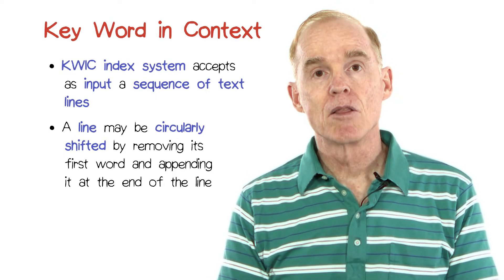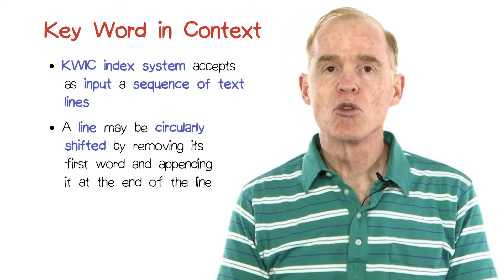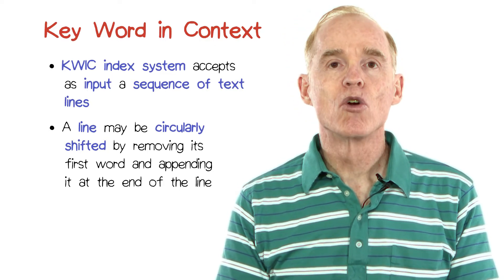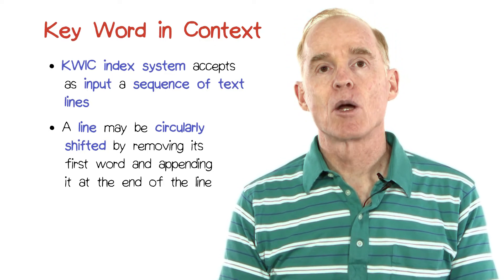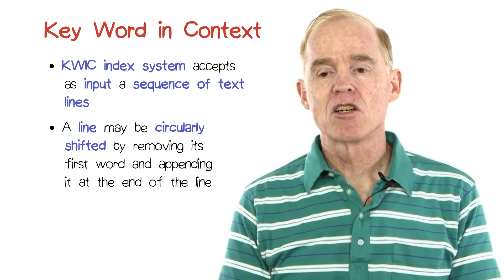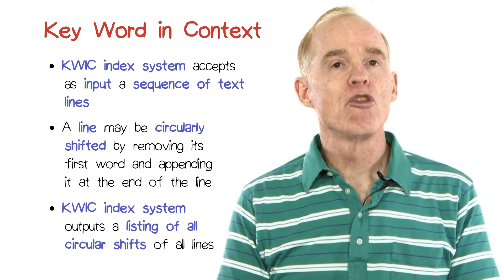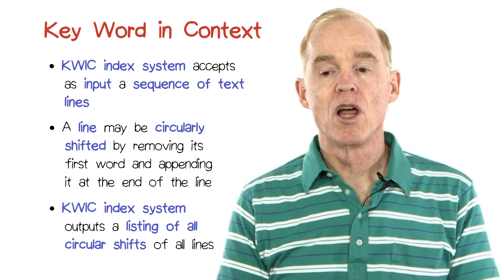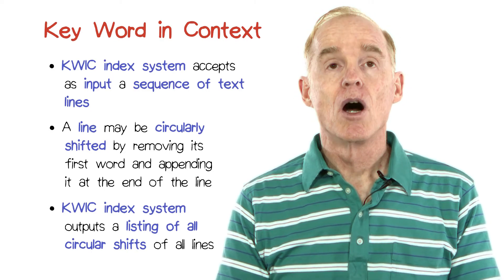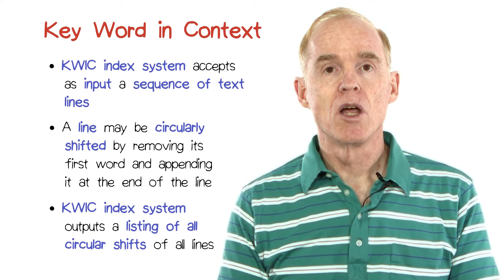The idea is that we can index into the list of lines using each of the words that comprise the line. The quick index system outputs a listing of all the circular shifts of all the lines in alphabetical order of the keyword used to shift the line.